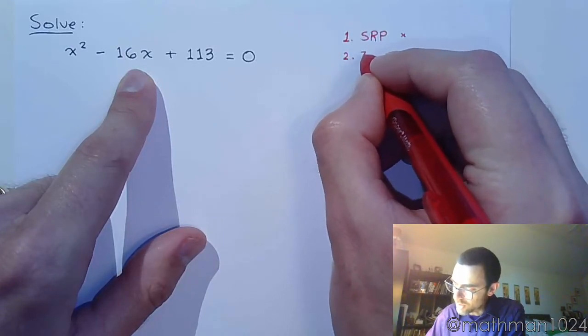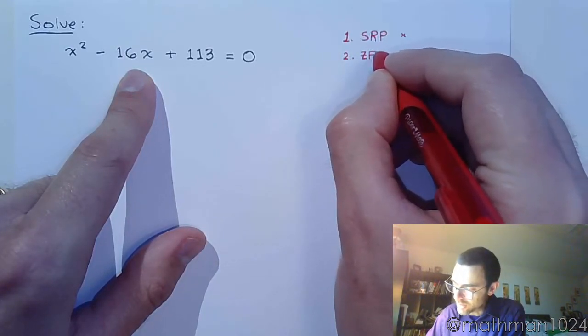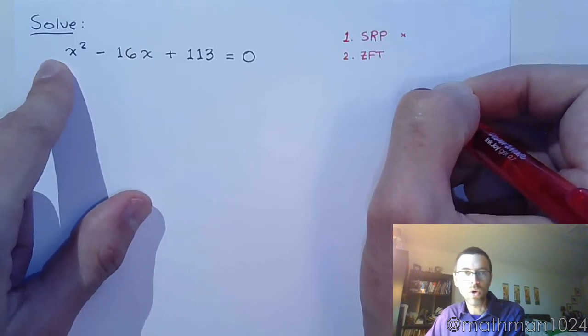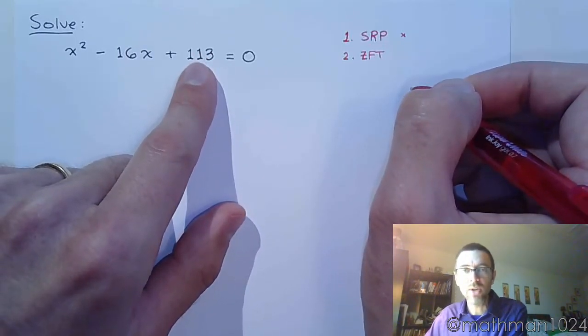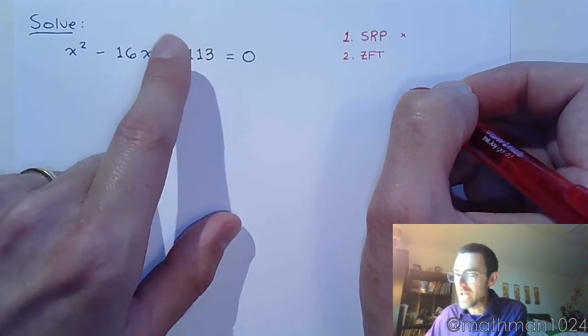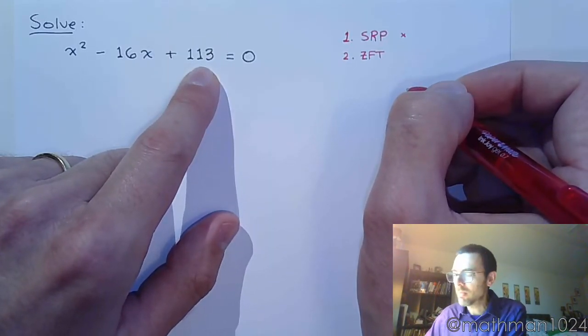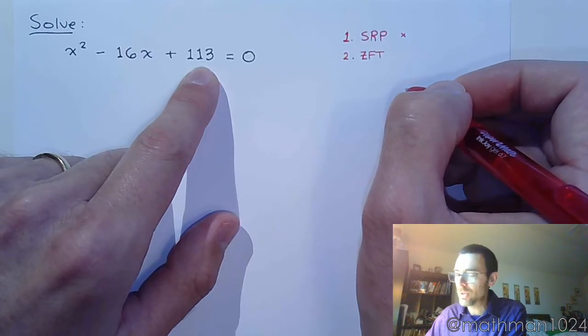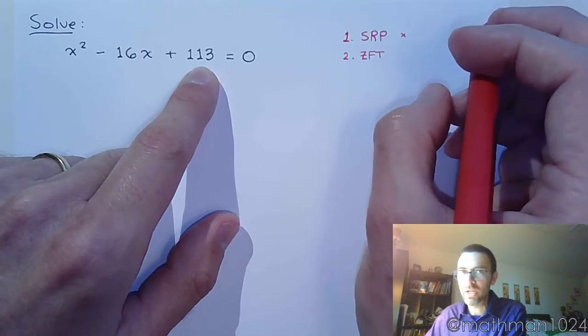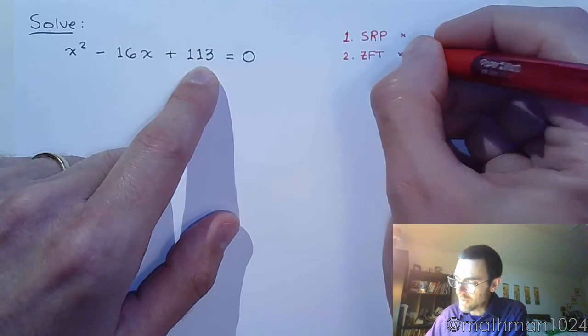The second thing we try to do is factoring. Well, this is 1, so we can look at the constant here and try to find factors of the constant that we'll add to 16. That's too large. It's never going to happen. Plus, it's prime. So we're done here. This guy does not factor.